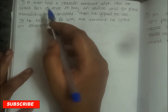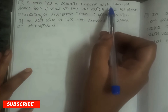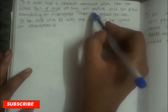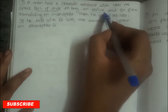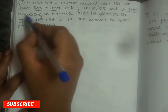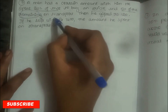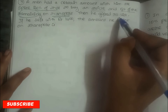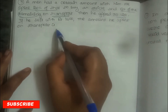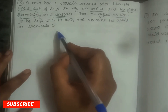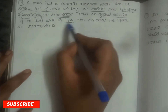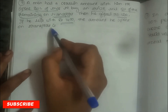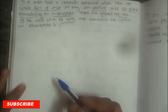Third problem: A man had a certain amount with him. He spent 20% to buy an article, then 5% of the remaining on transport, then gifted Rs. 120. If he is left with Rs. 1,400, find the amount he spent on transport.